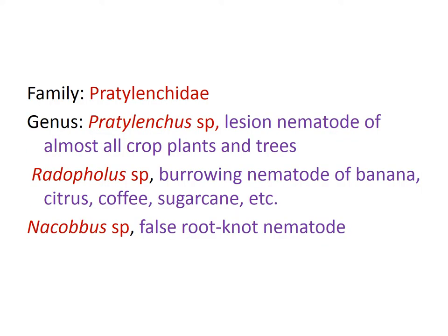Coming to the family Pratylenchidae — a very important family having many plant parasitic endoparasitic nematodes. The first one is the Pratylenchus species, which is a migratory endoparasitic nematode. It is called the lesion nematode because it causes lesion symptoms on roots of many crop plants and trees. Radopholus is called the burrowing nematode of banana, citrus, coffee, and various other crops.